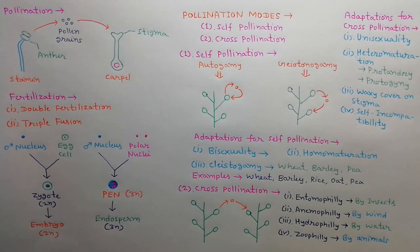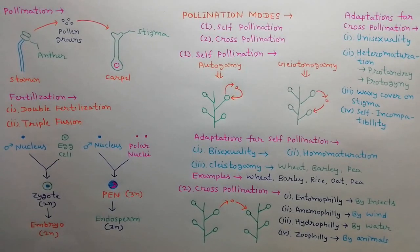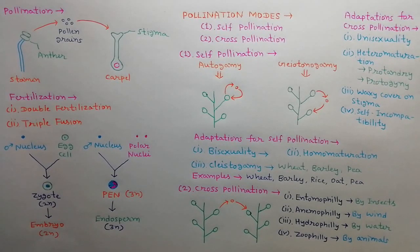The fourth adaptation is self-incompatibility. In many crops, alive and active pollens produced by flowers of a plant are unable to fertilize the flowers of the same plant — this is called self-incompatibility. In this situation, 100% cross-pollination takes place. Examples include mustard, rye, turnip, cabbage, tobacco, etc.